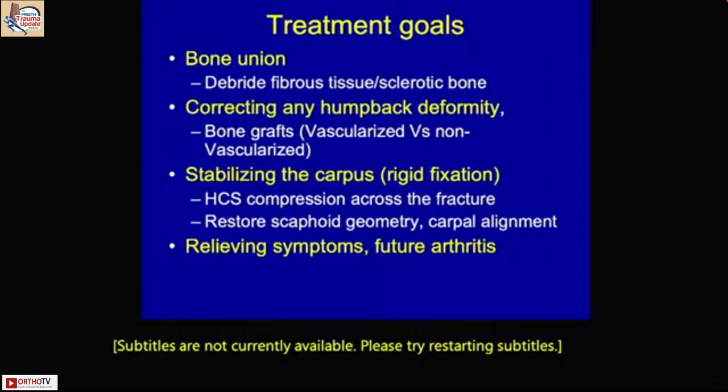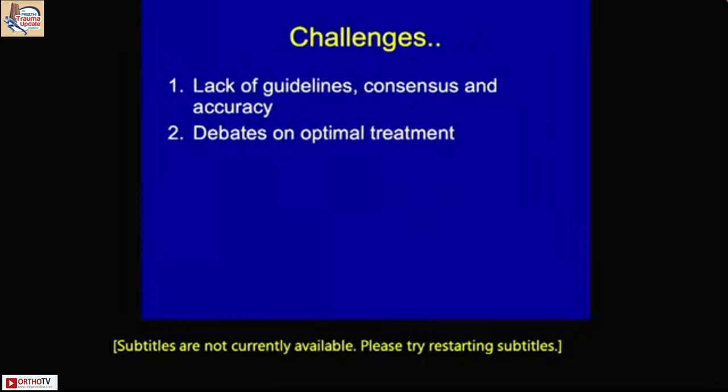The ultimate treatment goal is to achieve bone union and correct any deformity, which can result from a humpback deformity, and to stabilize the carpus. Rigid fixation is ideal, as it relieves symptoms and likely prevents future arthritis.